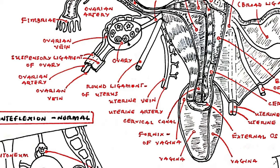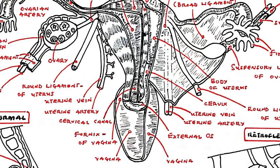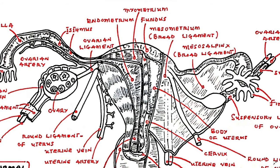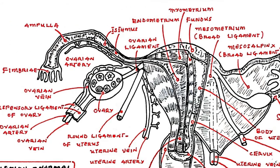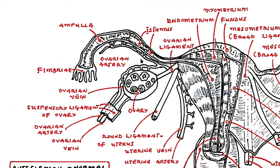The ovaries are whitish in color and located alongside the lateral wall of the uterus in a region called the ovarian fossa. The ovaries are connected to either side of the uterus by a fibrous cord known as the ovarian ligament.